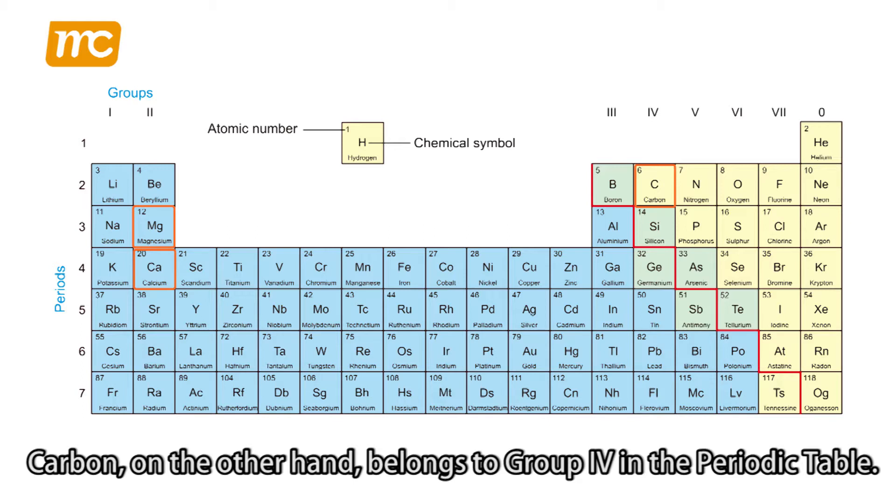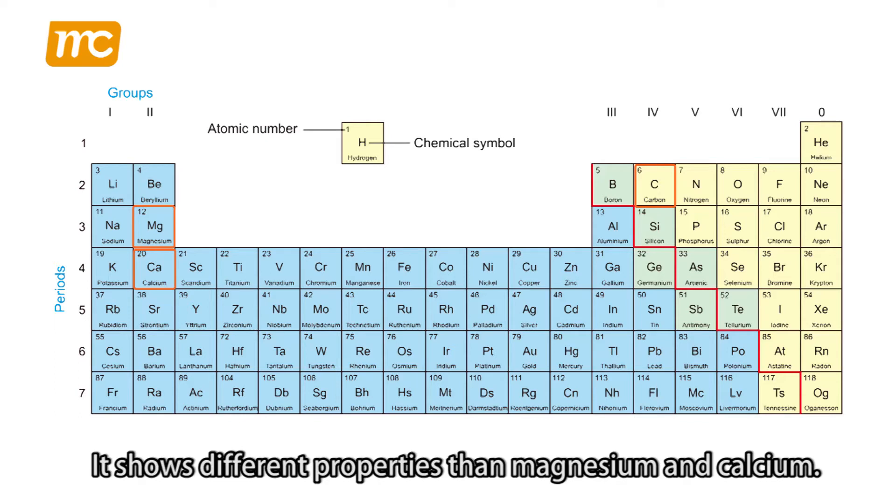Carbon, on the other hand, belongs to group 4 in the periodic table. It shows different properties than magnesium and calcium.